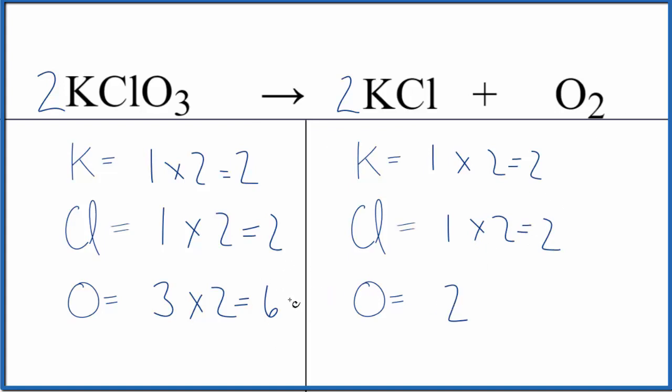And then oxygen, we need six oxygen atoms. Coefficient of three, two times three, that gives us six, and we are done. This equation is balanced. So the trick is when you have an odd number, it's often easier if you multiply it by two to get it to be an even number.